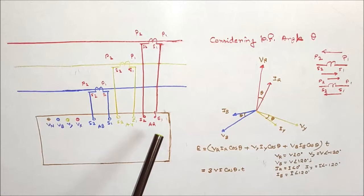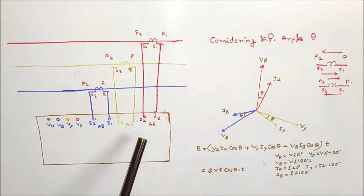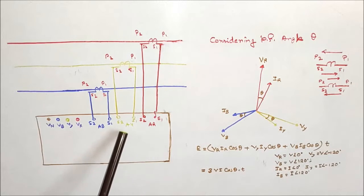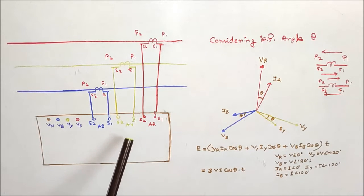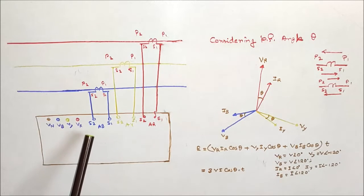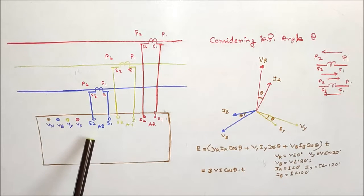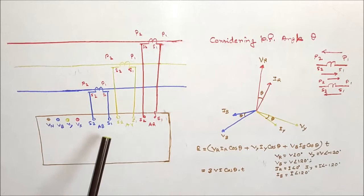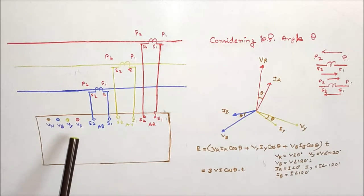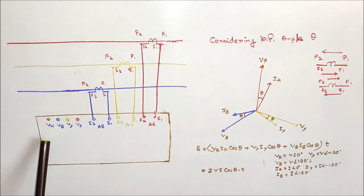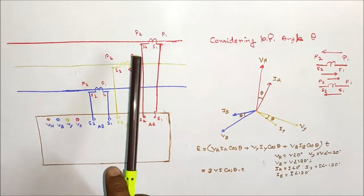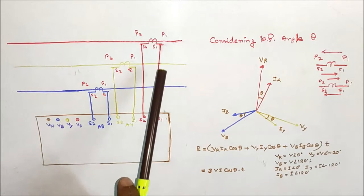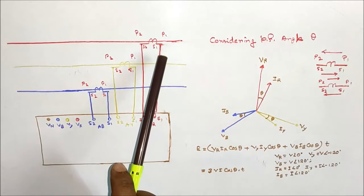The S1 and S2 terminals are the red phase current coil for the energy meter, and S1 and S2 are the yellow phase current coil, and S1 and S2 are the blue phase current coil for the energy meter — that is A-R, A-Y, A-B and B-R, B-Y, B-N.